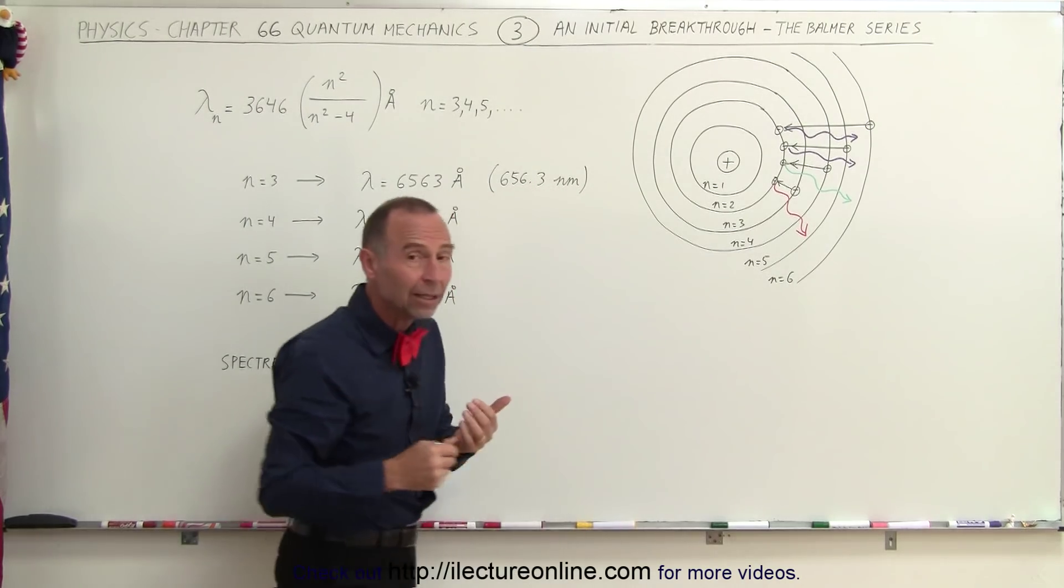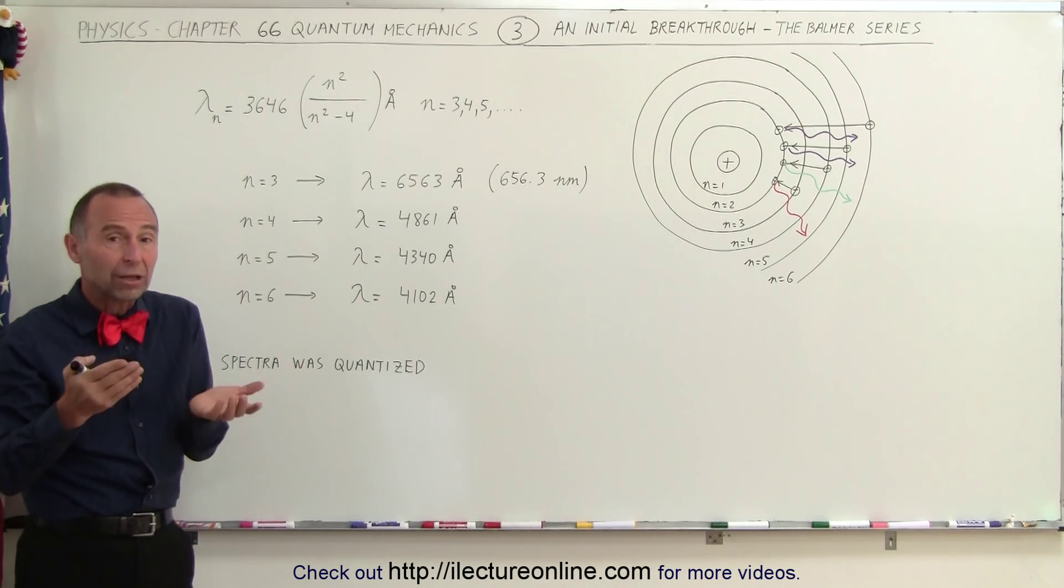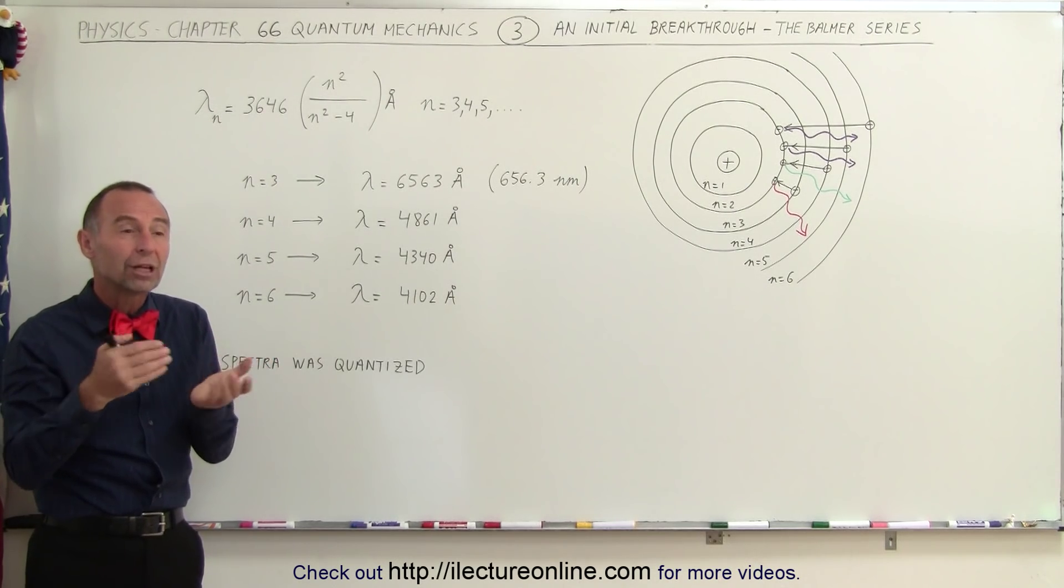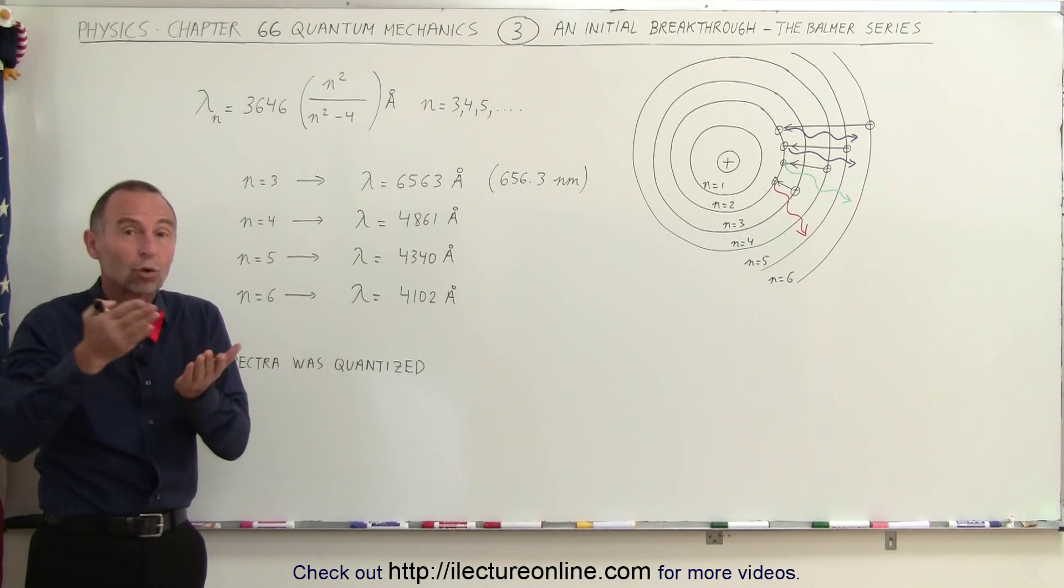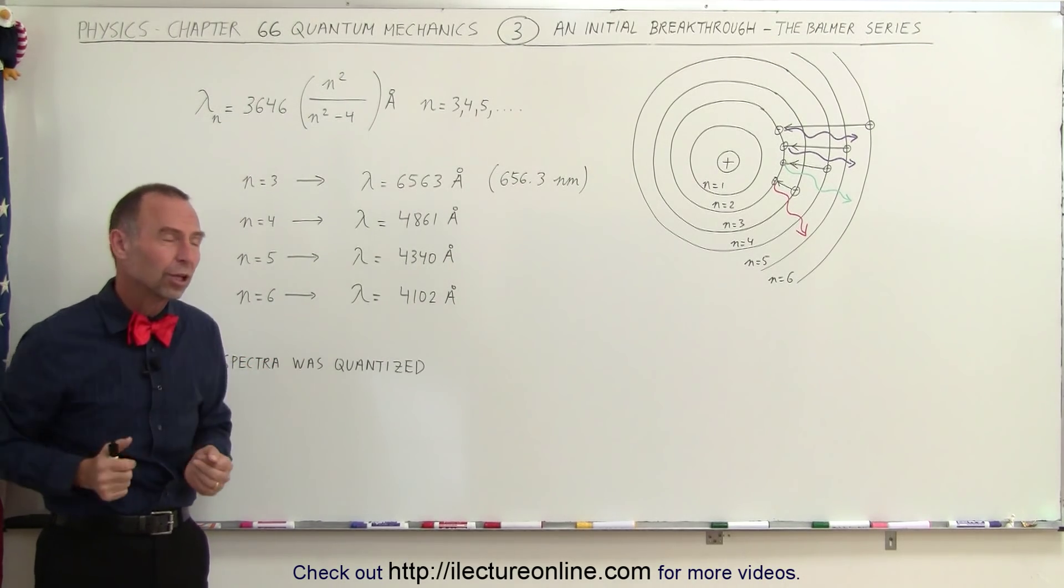Of course, back then, during the days of Balmer, they didn't know that. They did see the spectrum. They saw the emission spectrum. They saw those specific colors. But they couldn't prove or they couldn't show that that energy was actually quantized, that it actually depended upon an electron or something jumping from one level to another.